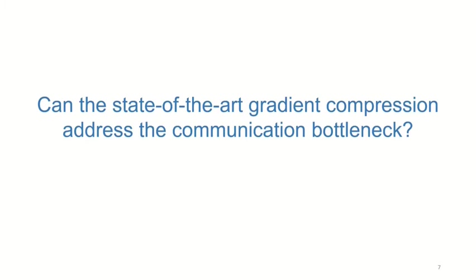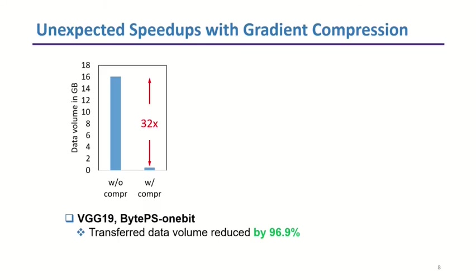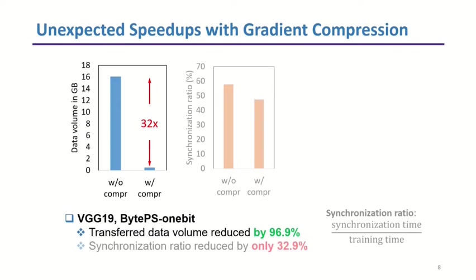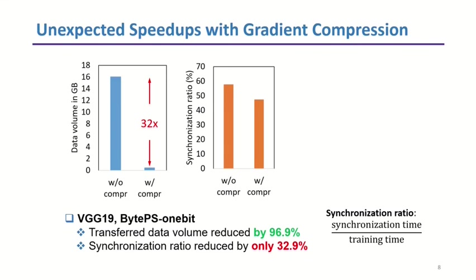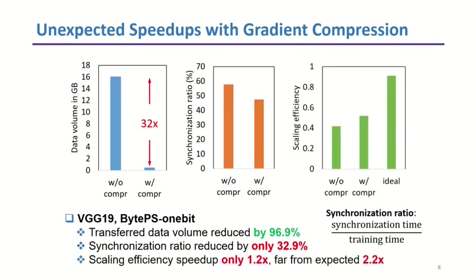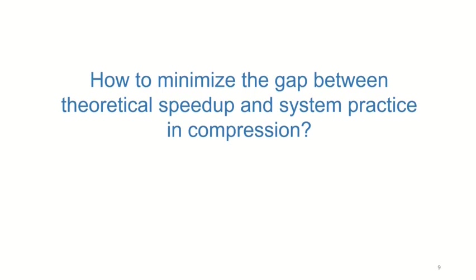So, can gradient compression address the communication bottleneck? We use 1-bit, one open-sourced compression algorithm, to evaluate the performance gain of compression. For the VGG-19 model, the 1-bit algorithm can significantly reduce the transferred data volume, but the synchronization ratio reduction and end-to-end scaling efficiency speed-up are much lower than expectation. Apparently, there is a big gap between theoretical speed-up and actual performance.